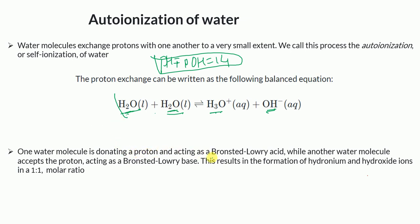One water molecule donates a proton, acting as a Bronsted-Lowry acid, while another water molecule accepts the proton, acting as a Bronsted-Lowry base. This results in the formation of the hydronium ion (H₃O⁺) and the hydroxide ion (OH⁻) in a 1:1 molar ratio. From two water molecules we get these two ions in equal amounts — this is the balanced equation for auto-ionization.